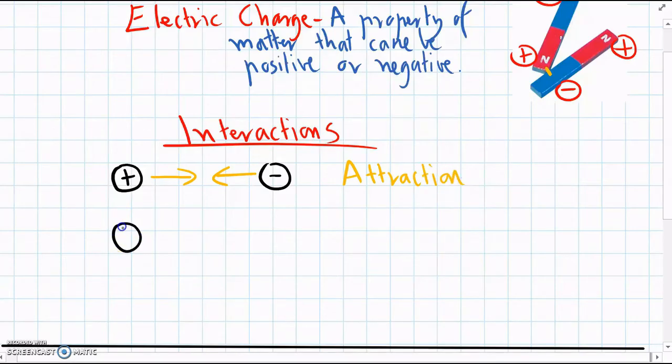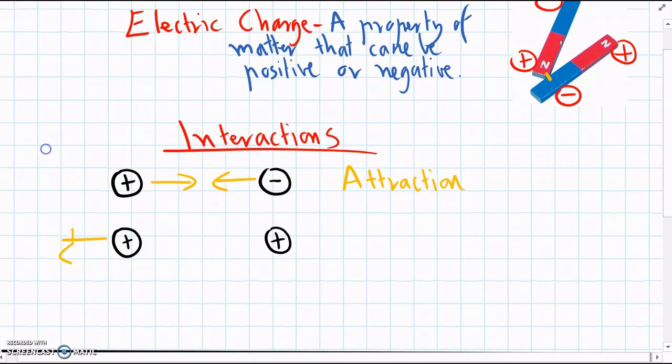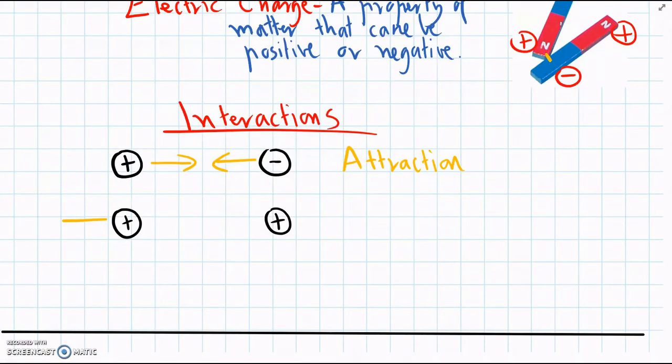If we have two positively charged objects near each other, the same charges push each other away, or they repel. They'll move away from each other - two positives repel.